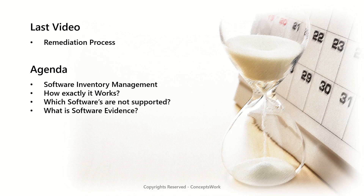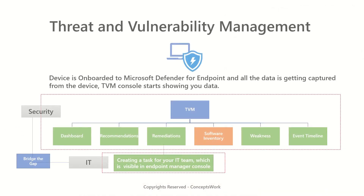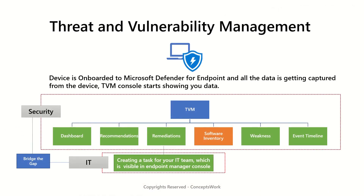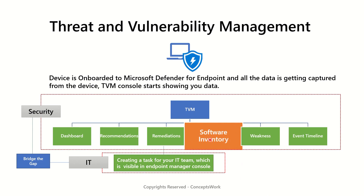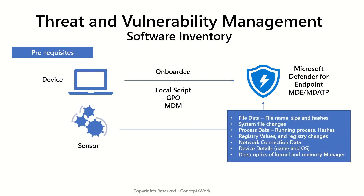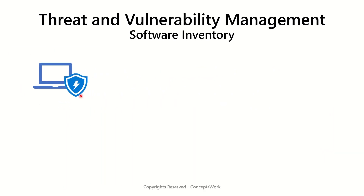We'll also cover what is software evidence and how to report inaccuracy. What you see now is the deck I used in our threat and vulnerability management video where I discussed different options available on the console. In this video we are going to check all the details about software inventory. The first prerequisite is to make sure all the devices are onboarded to Microsoft Defender for Endpoint, as the same data captured by sensors is used for software inventory. The expected behavior is that as soon as a device is onboarded, it will start showing you the list of all the softwares as well as the vulnerabilities associated with them.